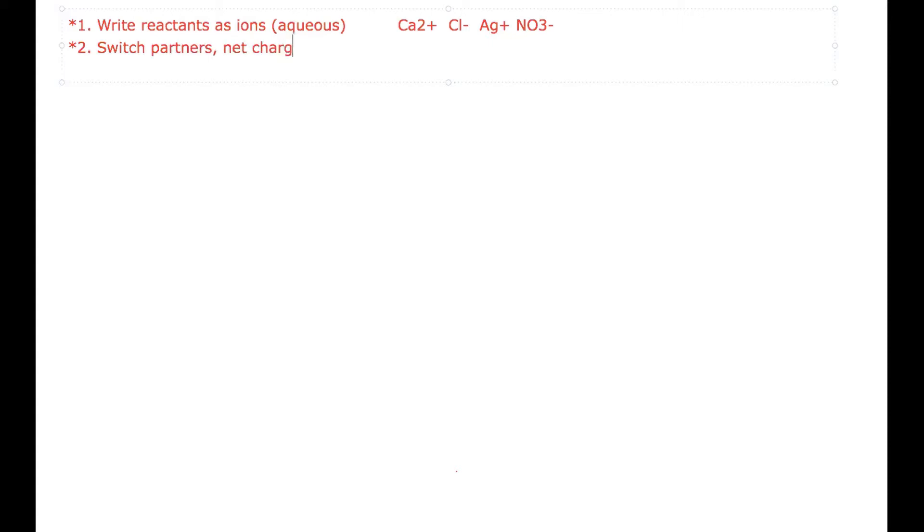Step two was switch partners. That charge equals zero, I won't write it again, but it was metal plus non-metal, so we had Ca(NO3)2 and AgCl. Step three was balance with coefficients. So now we want the whole equation: it's CaCl2 + AgNO3...